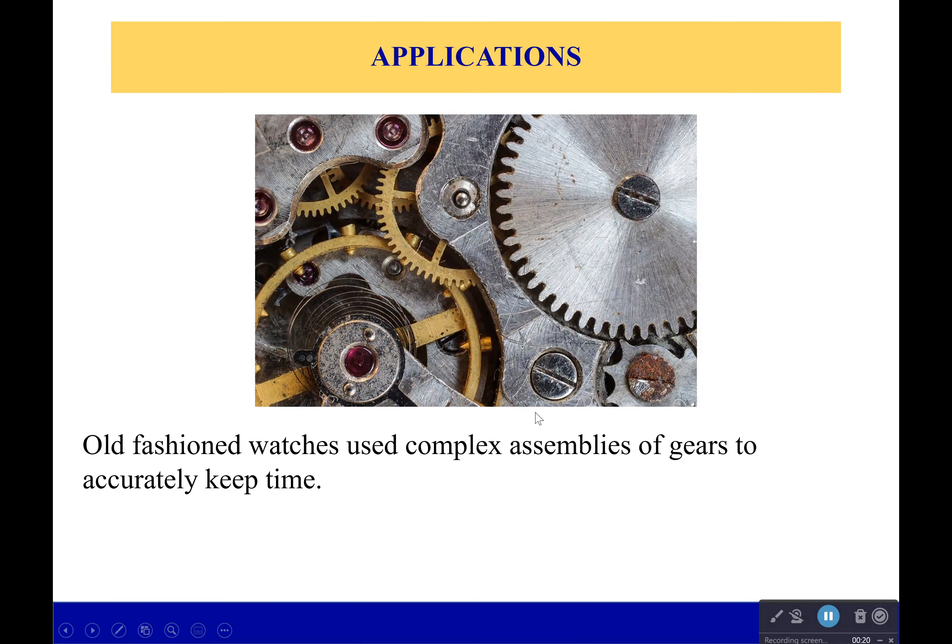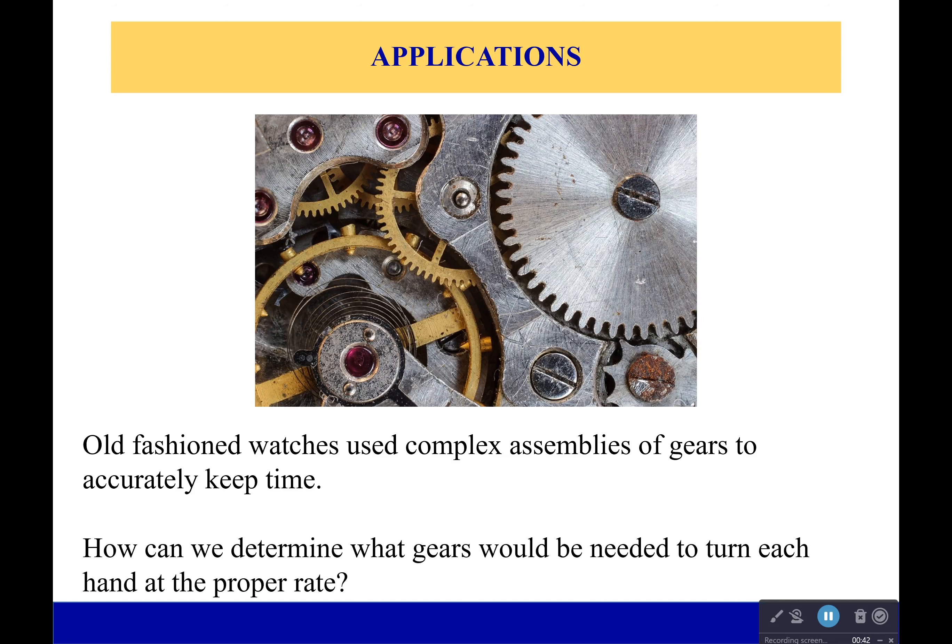Now many of you might have a watch, less of you now but likely not a mechanical watch. But it used to be that countless gears were inside of these little tiny pocket watches, and those gears based on the ratios that were moving and how fast one gear wound by a spring was moved, it would keep the time. But how could you determine what gears would be needed to turn each of the hands at their proper rate?